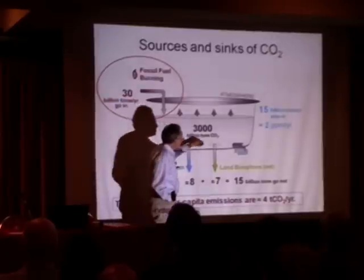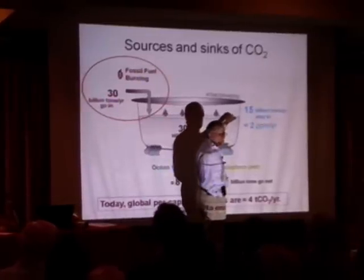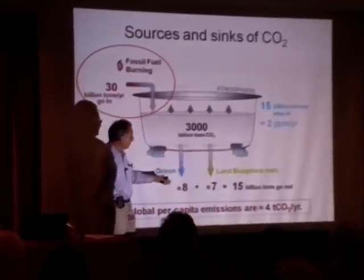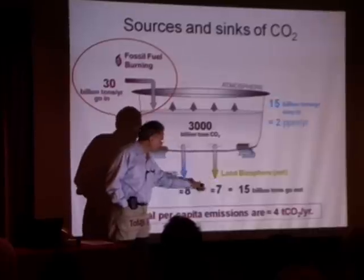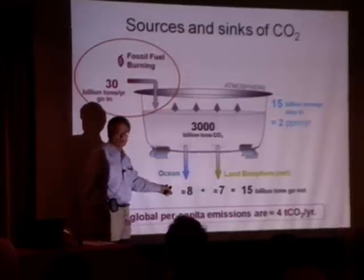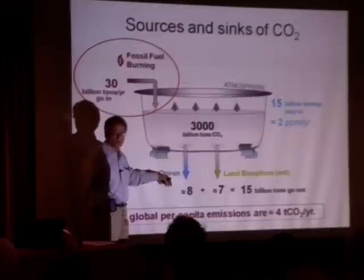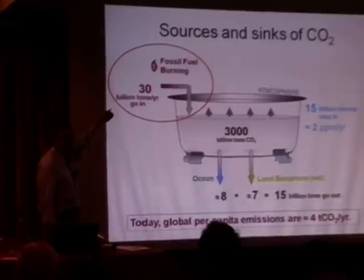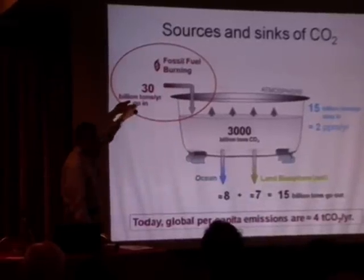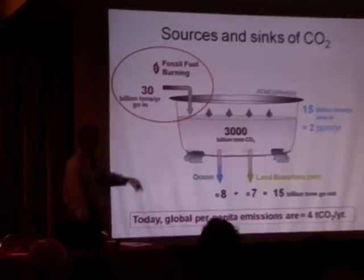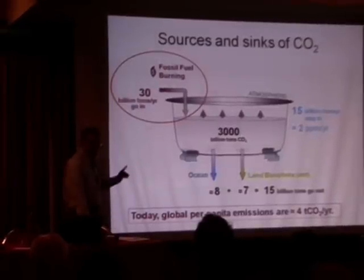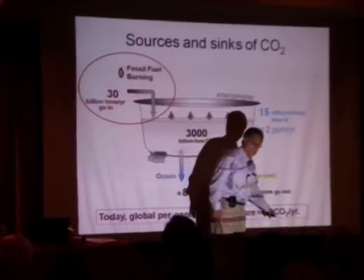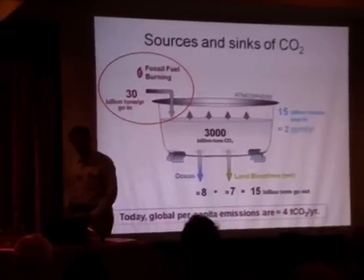The rate at which the atmospheric level is rising is not equal to the rate at which we're adding, because there are sinks. The forests of the world are getting a little bigger, and the ocean is soaking up some CO2 — becoming more acidic in the process. If I take 30 billion tons and divide by roughly 7 billion people, a simple number comes out: four tons of CO2 per year is the global average per person.